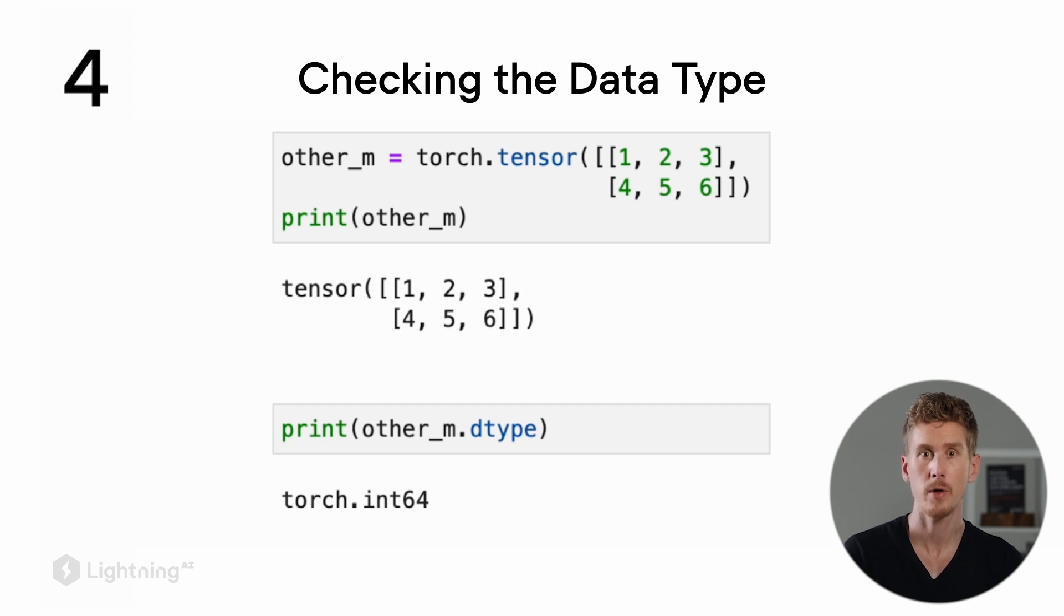In PyTorch, by default, the precision for encoding integers is 64 bits, compared to 32 bits for floats.